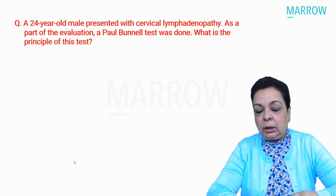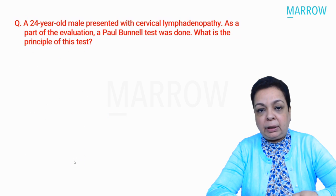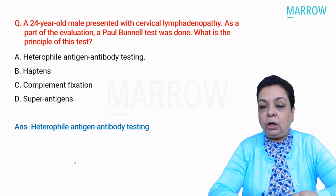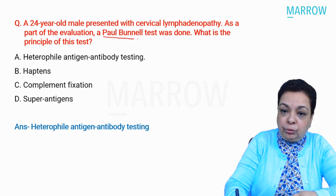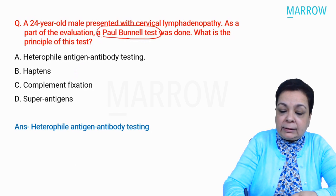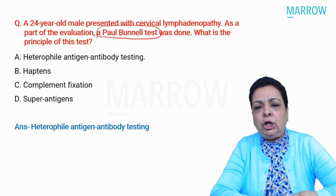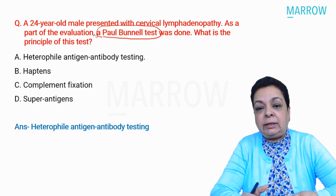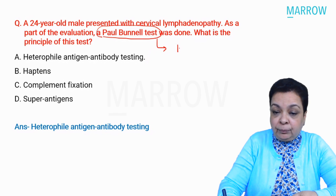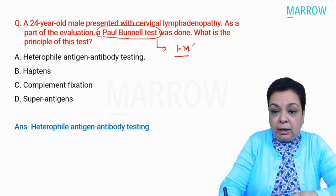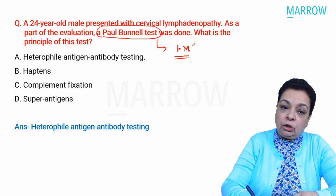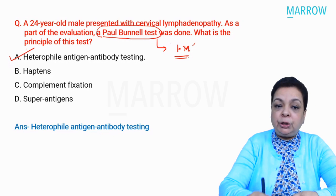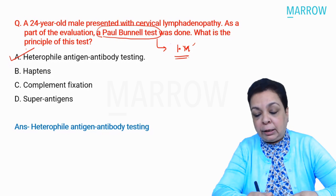Let's get started. A 24-year-old male presented with cervical lymphadenopathy. A Paul Bunnell test was done. What is the principle of this test? The moment you read Paul Bunnell test, you remember the heterofile agglutination test.